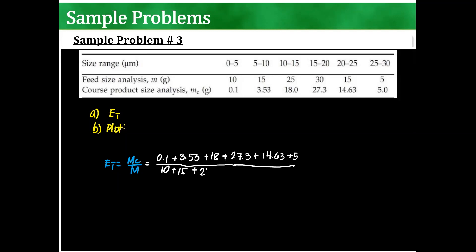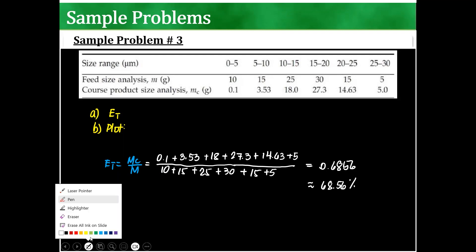10, 15, 25, 30, 15, and 5. Can you please give this to me? So 0.6856 or 68.56% is the efficiency. That's your letter A.